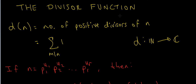In the previous video we discussed a few things about the divisor function. As a reminder, the divisor function counts the number of positive divisors of n. This was summarised in summation notation as the sum over all divisors m of n, where each time we find a divisor we add 1.